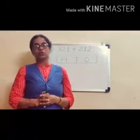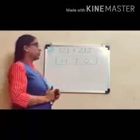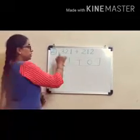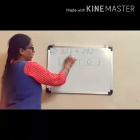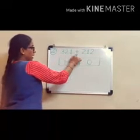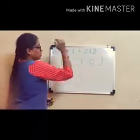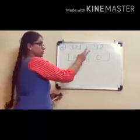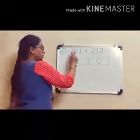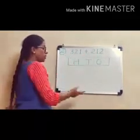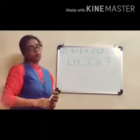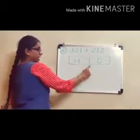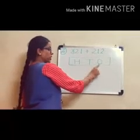Now we are going to add 3-digit numbers. Our numbers are 321 and 212. We will add these two 3-digit numbers. We will arrange them in the columns of 100s, 10s, and 1s.